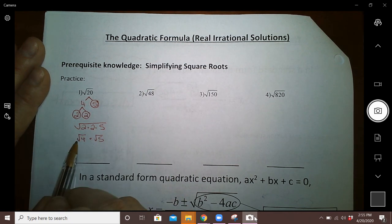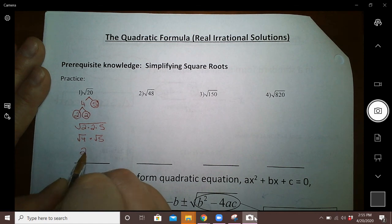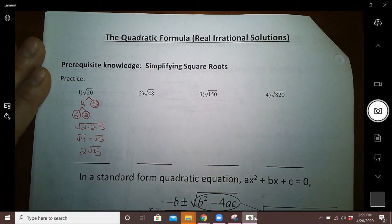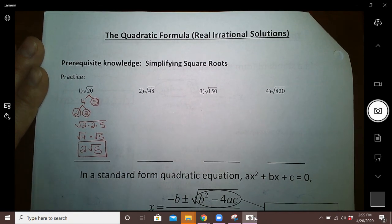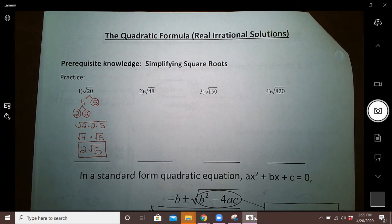And the square root of 4 is a regular 2, and the square root of 5 cannot be simplified. So my final simplified version of the square root of 20 is 2 times the square root of 5.